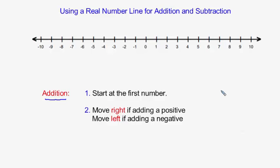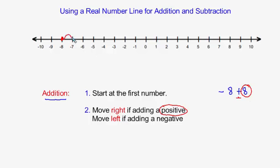In another example, we take negative 8 and add 8. This is still an addition problem, so I use the same two rules. Step 1: start at negative 8 on the number line. Step 2: the second number is positive 8, so I move to the right 8 units. Starting at negative 8 and moving right 8 units lands me at 0, meaning negative 8 plus 8 equals 0.